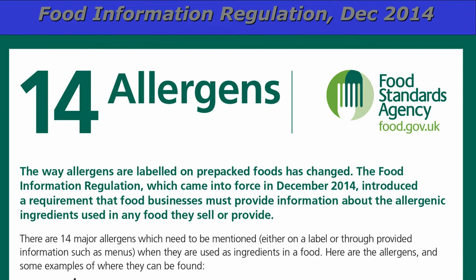Under the Food Information Regulation December 2014, it is now law that 14 allergens are to be recognized as problem areas. The way allergens are labelled on pre-packed foods has changed. There are 14 major allergens which need to be mentioned either on a label or through provided information such as menus, when they're used as ingredients in a food.